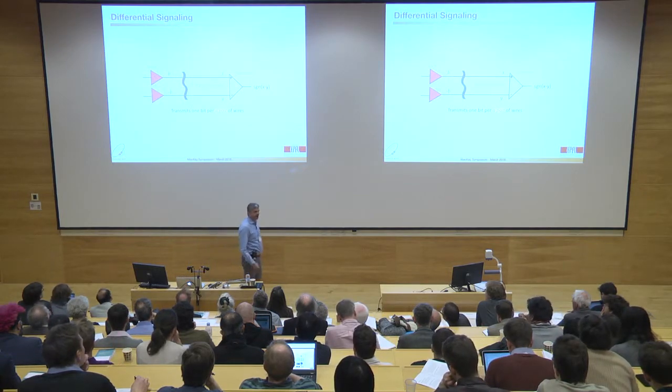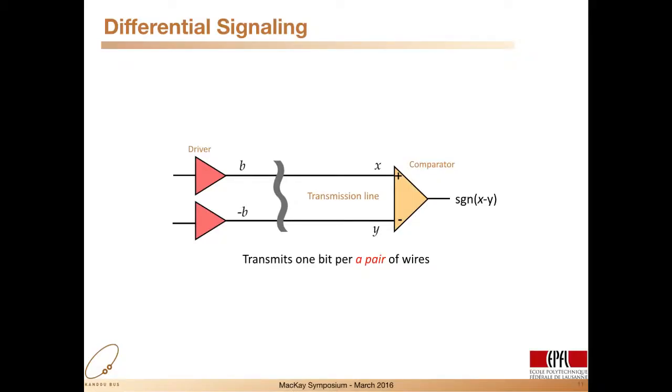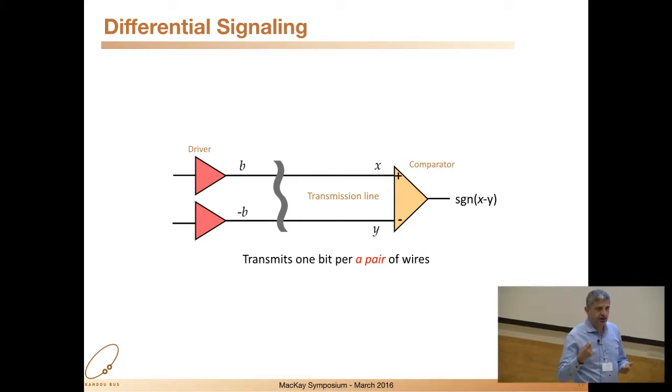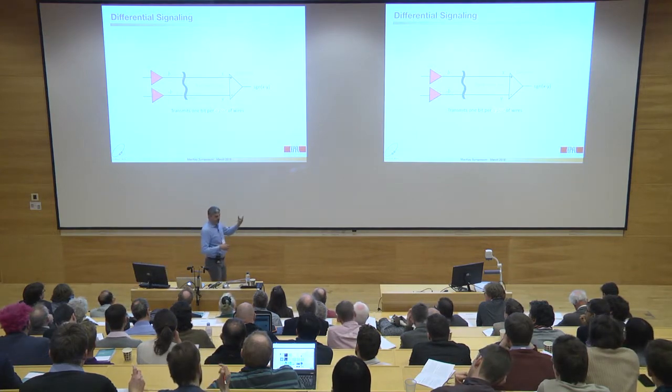People have been doing this kind of stuff for years, for decades, called differential signaling. What they do is they transmit one bit across two wires. So if you think of bits being transmitted as plus one and minus one, then you send either a plus one and a minus one on the two wires or a minus one and a plus one. And then there is an electronic circuit that's called the comparator. This comparator essentially takes a difference of the wire values and determines its sign with a very efficient circuit.